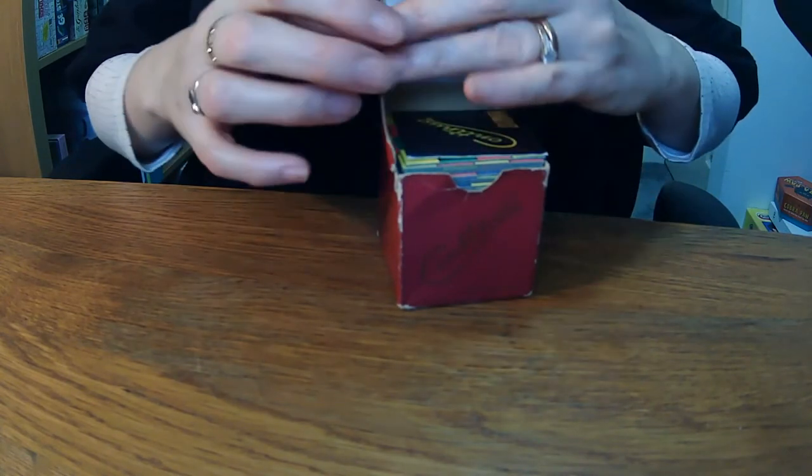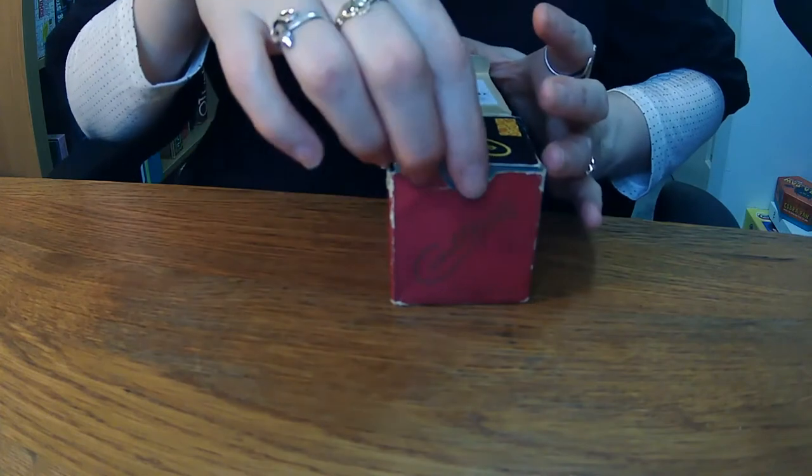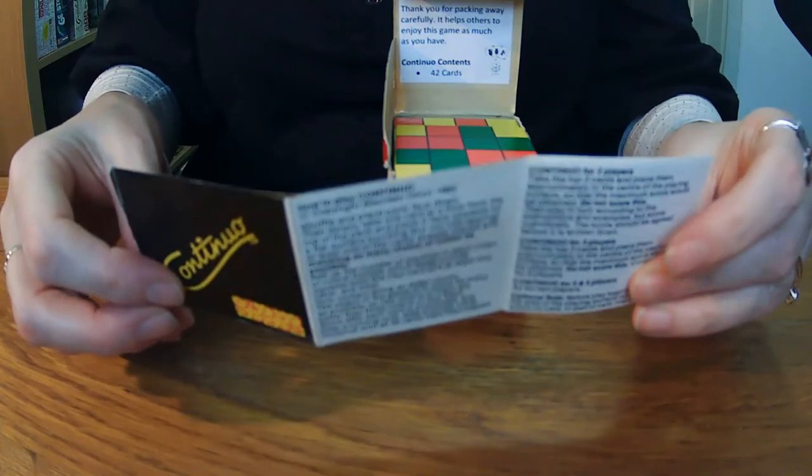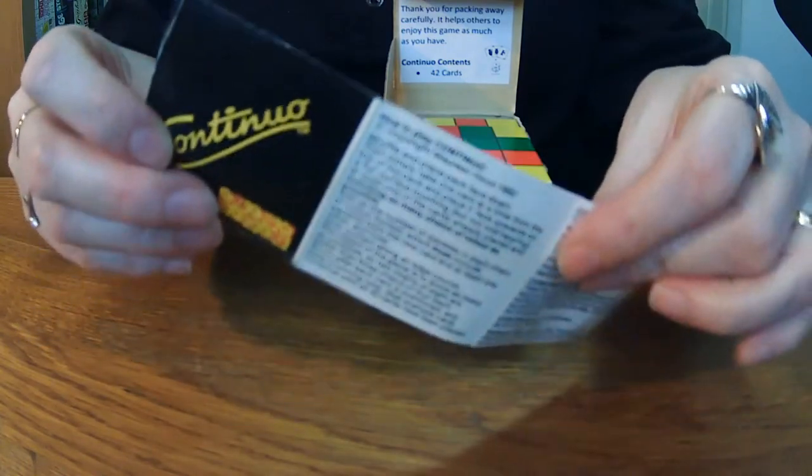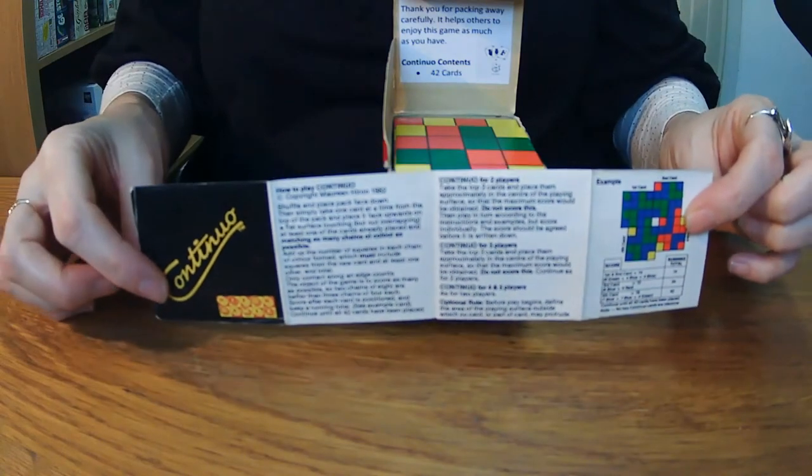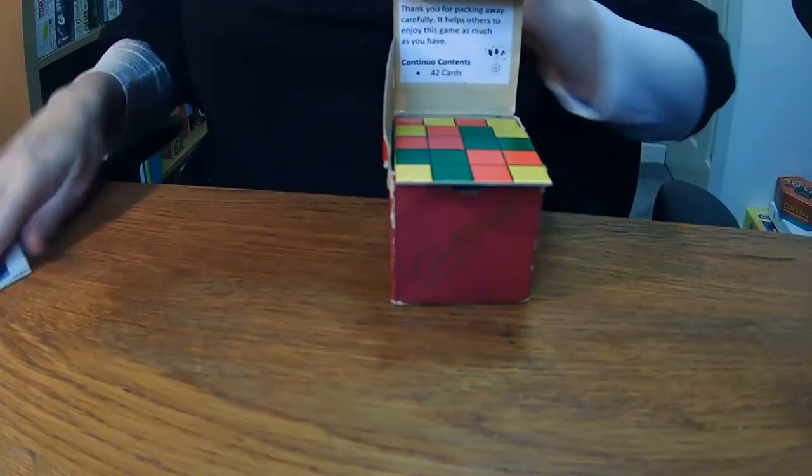You can see it's kind of falling apart a bit. There's the rules, just a tiny little rulebook. I think there's one more page, yep, there we go, tiny rulebook. And then we've got 42 different cards.